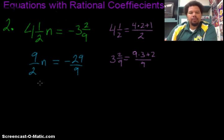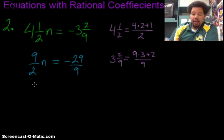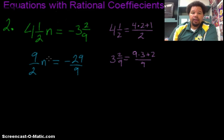So now that they're both improper fractions, we're going to go ahead and isolate or get our variable by itself, but it is being multiplied by this 9 over 2. So what does that tell me I need to do? I do the opposite. The opposite of multiplying by 9 over 2 is dividing by 9 over 2. So I'm going to divide by 9 over 2 to both sides.